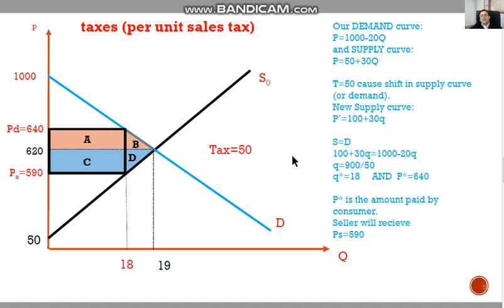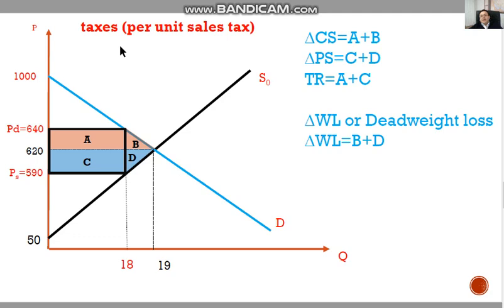Before the tax, our equilibrium is 620 and 19. But after tax, our quantity declined, our consumer surplus declined by area A plus B, and our producer surplus declined by C plus D. Our tax revenue equals A plus C.